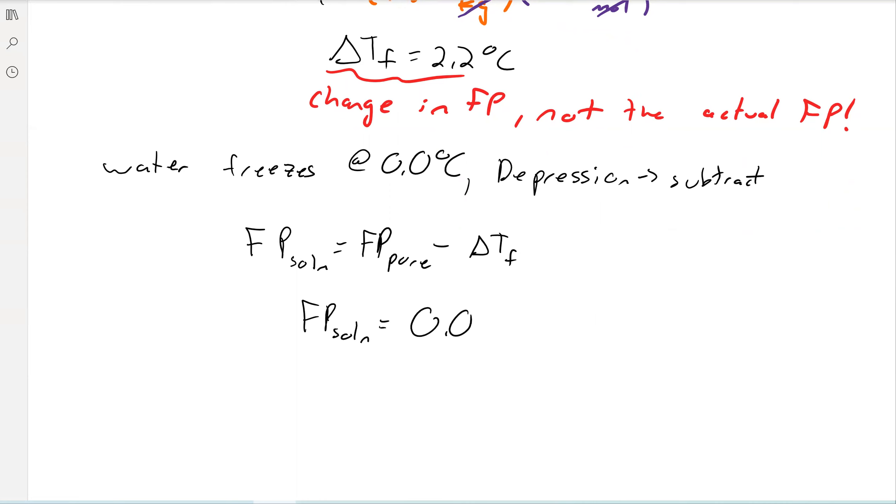So then it'd be 0.0 degrees Celsius minus 2.2 degrees Celsius, and the freezing point of our solution is now negative 2.2 degrees Celsius. So you can see by adding salt, we've lowered the freezing point from 0 degrees Celsius to negative 2.2 degrees Celsius.